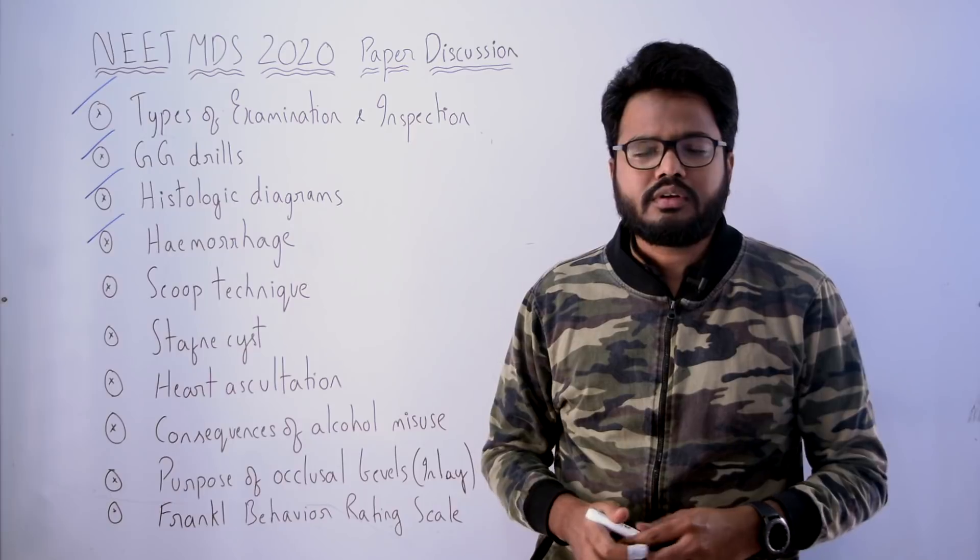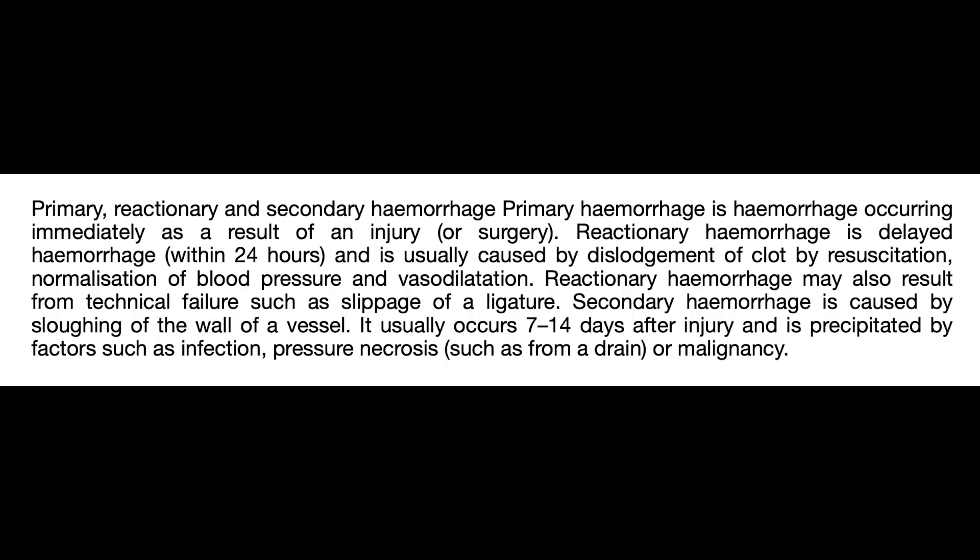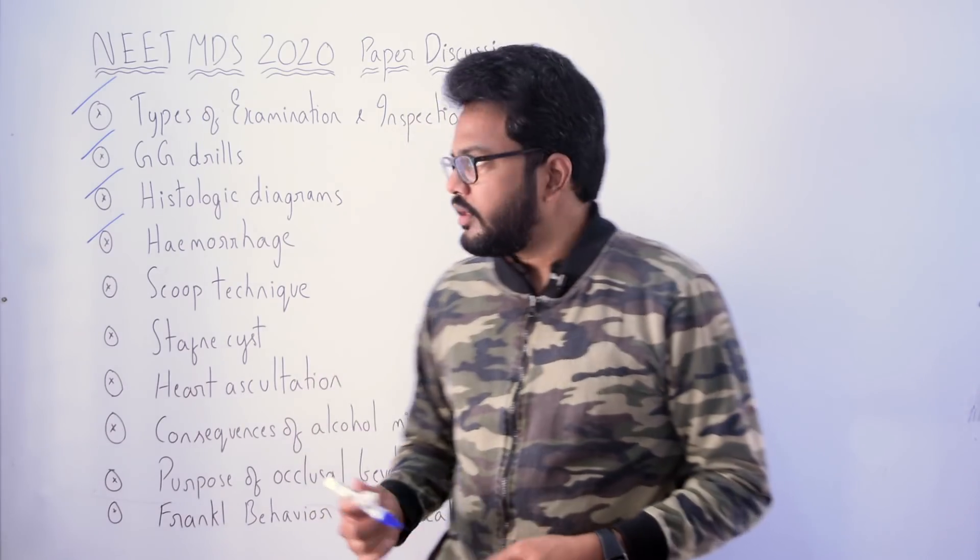Next question: hemorrhage. The three types are primary, reactionary, and secondary. Primary hemorrhage occurs immediately as a result of an injury or surgery. Reactionary hemorrhage is delayed hemorrhage within 24 hours, usually caused by dislodgement of a clot by resuscitation, normalization of blood pressure, and vasodilation — it may also result from technical failures such as slippage of a ligature. Secondary hemorrhage is caused by sloughing of the wall of a vessel, usually occurring 7 to 14 days after injury, precipitated by factors such as infection, pressure necrosis, or malignancy.